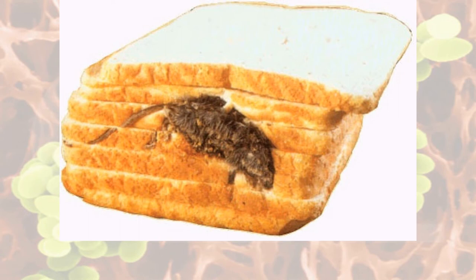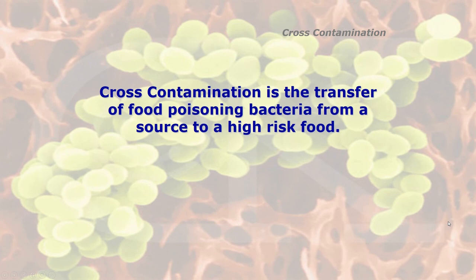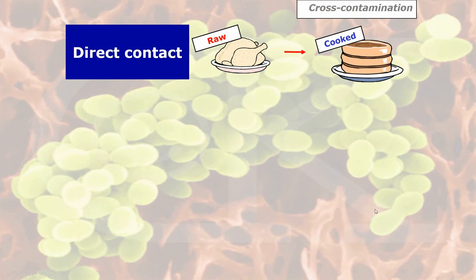There's an example where a mouse was actually found baked inside a loaf of bread, cooked and sliced with it — however the core temperature of the mouse was over 75°C, so it was technically safe to eat. What is cross contamination? It's the transfer of food poisoning bacteria from a source to a high risk food. An example is direct contact: raw chicken, which carries contamination on the skin — especially Campylobacter — coming into physical contact with cooked ready-to-eat food.